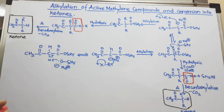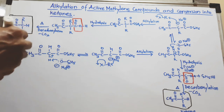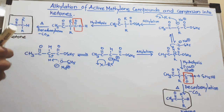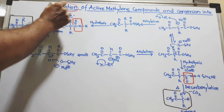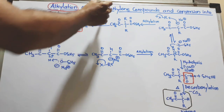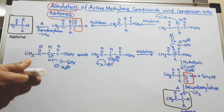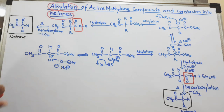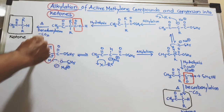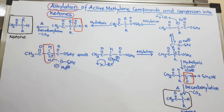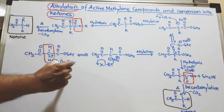In this video we are going to discuss just two reactions about active methylene compounds. One is the alkylation reaction, and another is how active methylene compounds are converted into ketones. In the previous video we saw the meaning of active methylene compounds, where the methylene group is very active because of two acidic products.